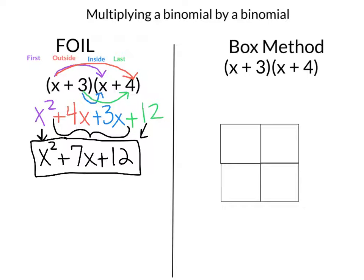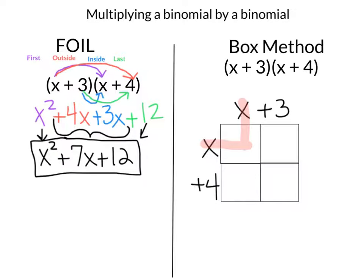So let's do the same thing now, but let's do the box method. I'm going to start and write X plus 3 across the top of my box, one value in each column. Then for my second binomial, I'm going to put that over here on the left side, one value for each row. I'm going to use a highlighter here to help show us what we're multiplying together. So here I'm going to take my X times my X — each row and each column is going to be multiplied together — and X times X is X squared.